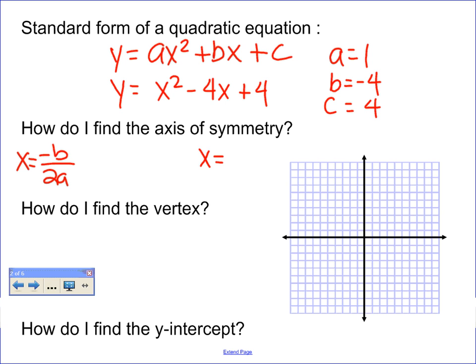Let's go ahead and plug in my values from the example. I've got negative b, and b is negative 4. So the negative of negative 4 over 2 times 1. The negative of negative 4 is positive 4 over 2, which is just 2. So my axis of symmetry is x equals 2, and I'm going to have a little imaginary line here dividing my parabola into two symmetrical parts.